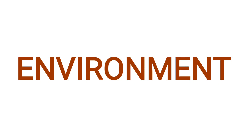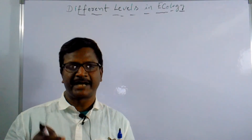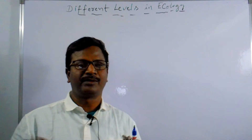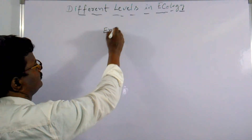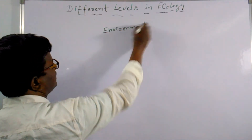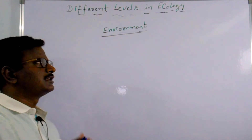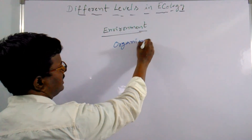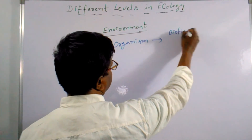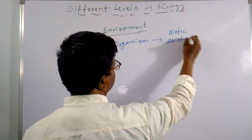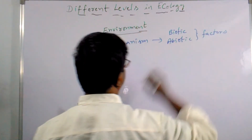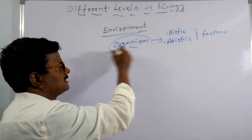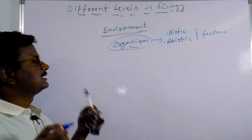Next, we will discuss about environment. Environment means the sum total of biotic and abiotic factors around the organism, influencing it in many ways. The organism is surrounded by biotic factors and abiotic factors. This is called environment.